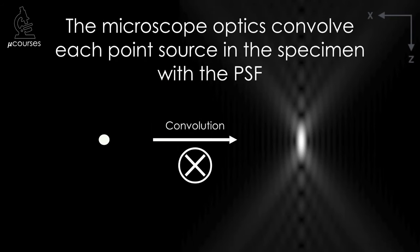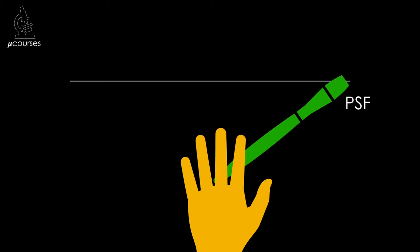We've been talking about images of point sources and resolving two objects, but you're all interested in imaging stuff that's much more complicated than that. So let's think about how the point spread function affects the image of your biological samples. The microscope optics convolve every point source of light in your sample with the point spread function — you can think of this as stamping a point spread function on top of every point source in your sample. So the image of your specimen generated by the microscope is equal to your specimen convolved by the point spread function, as if the point spread function is a paintbrush of a particular size used to form the optical image of your sample.